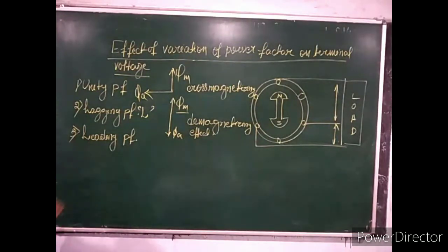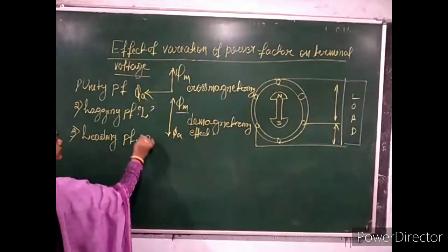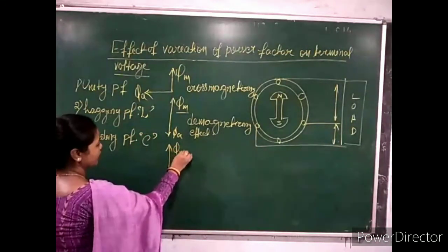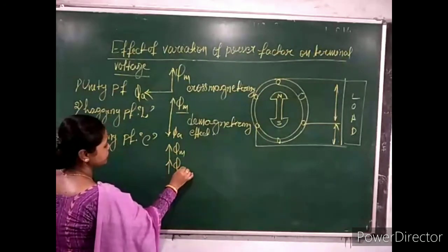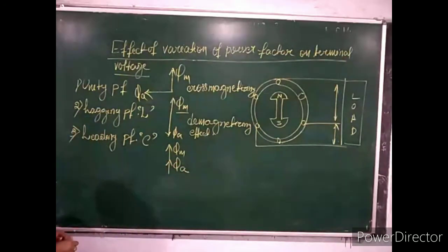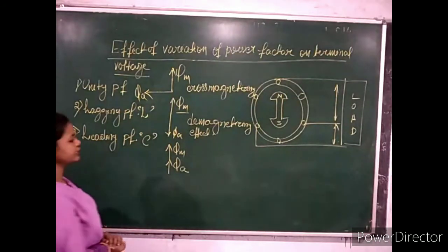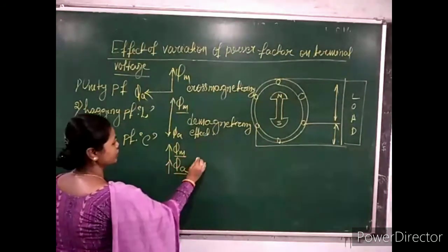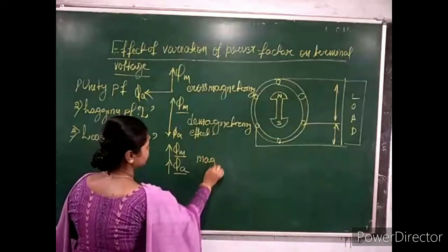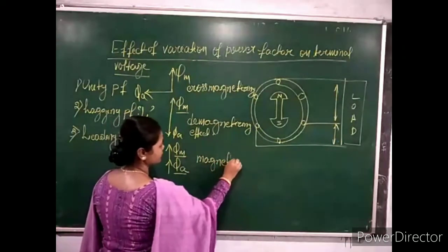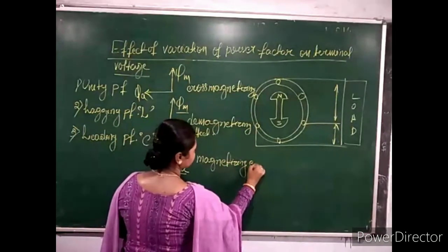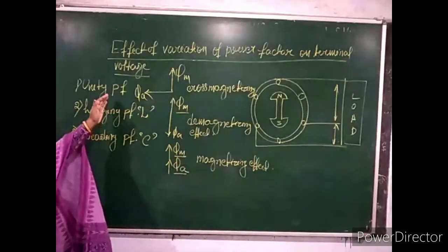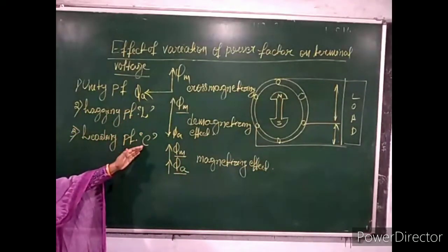For leading power factor — meaning a purely capacitive circuit — the armature flux assists the main flux, and this nature of armature flux relative to the main flux is called the magnetizing effect. This applies for purely resistive, purely inductive, and purely capacitive cases.